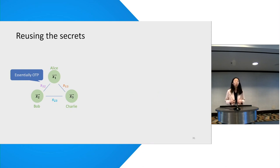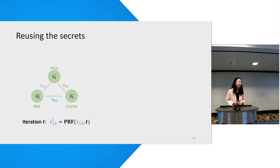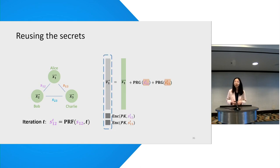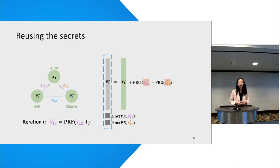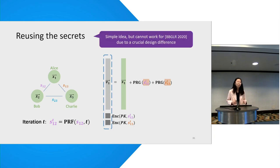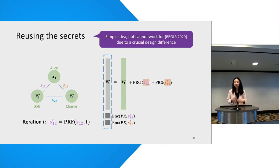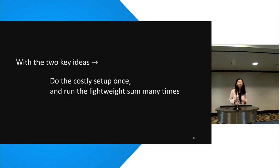Now the second key idea: if we trivially repeat the previous protocol, it's not secure because the masks are essentially one-time pads. But we only need a slight modification. At iteration t in the training process, each client computes an iteration-specific secret by applying a PRF on the pairwise secrets and the iteration number. This iteration-specific secret is appended to the vector. If Charlie went offline, the server asks the decryptors to recover the iteration-specific secrets instead of the original pairwise secrets. As a result, the setup phase never needs to run again. This idea looks simple but is actually not compatible with some previous work due to a crucial difference in the fault-tolerant design. So with these two key ideas, we do the costly setup once and then run the private sum many times efficiently.